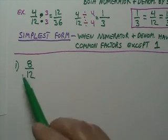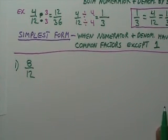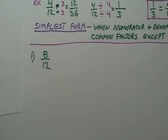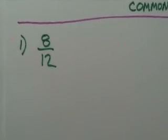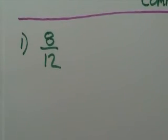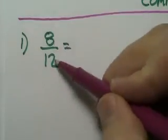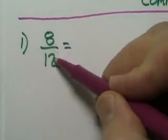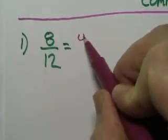I drew a line across mine and we're going to do seven examples. Here's example number one. Looking at 8 and 12, what they have in common — a number that will go into both of these — is the number four.